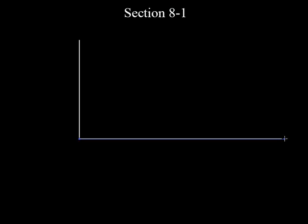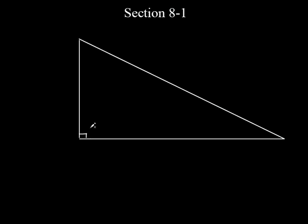Let's talk about some things that we know already about right triangles. So let me draw a nice little right triangle here. The first thing that comes to mind is 90 degrees — that right angle. It's called a right triangle for a reason because it has an angle that's 90 degrees.